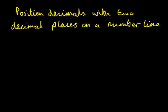Position decimals with two decimal places on a number line. Let's take an example, 0.67 and 1.54.